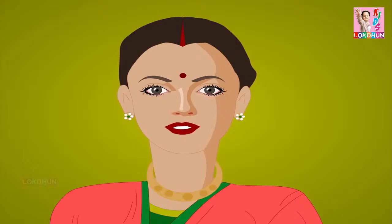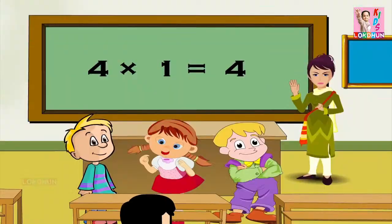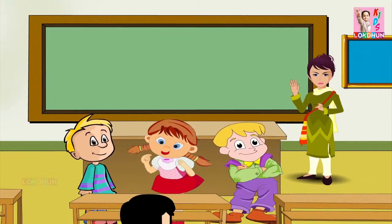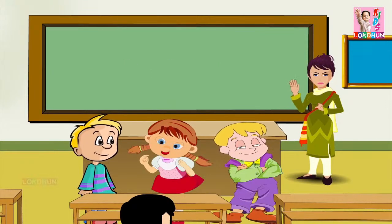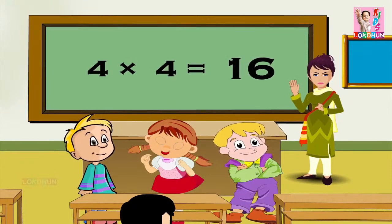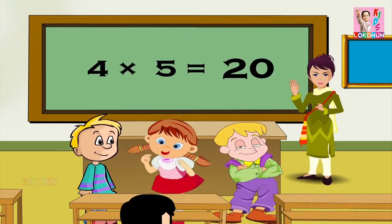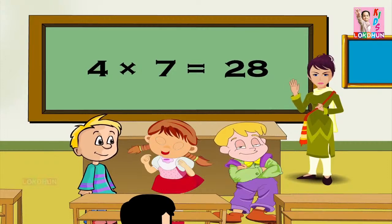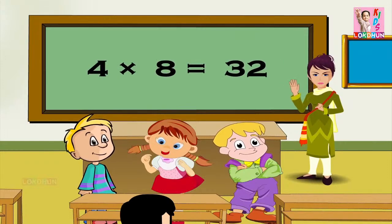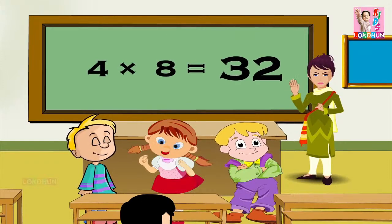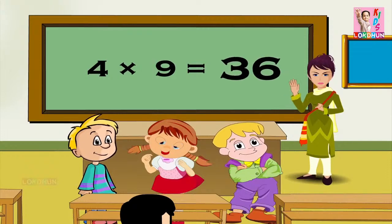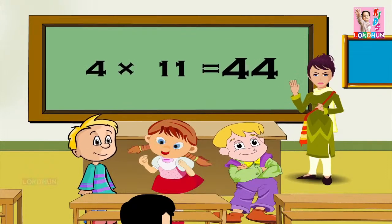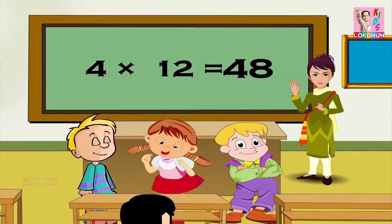Over to you children. 4 1s are 4, 4 2s are 8, 4 3s are 12, 4 4s are 16, 4 5s are 20, 4 6s are 24, 4 7s are 28, 4 8s are 32, 4 9s are 36, 4 10s are 40, 4 11s are 44, and 4 12s are 48.